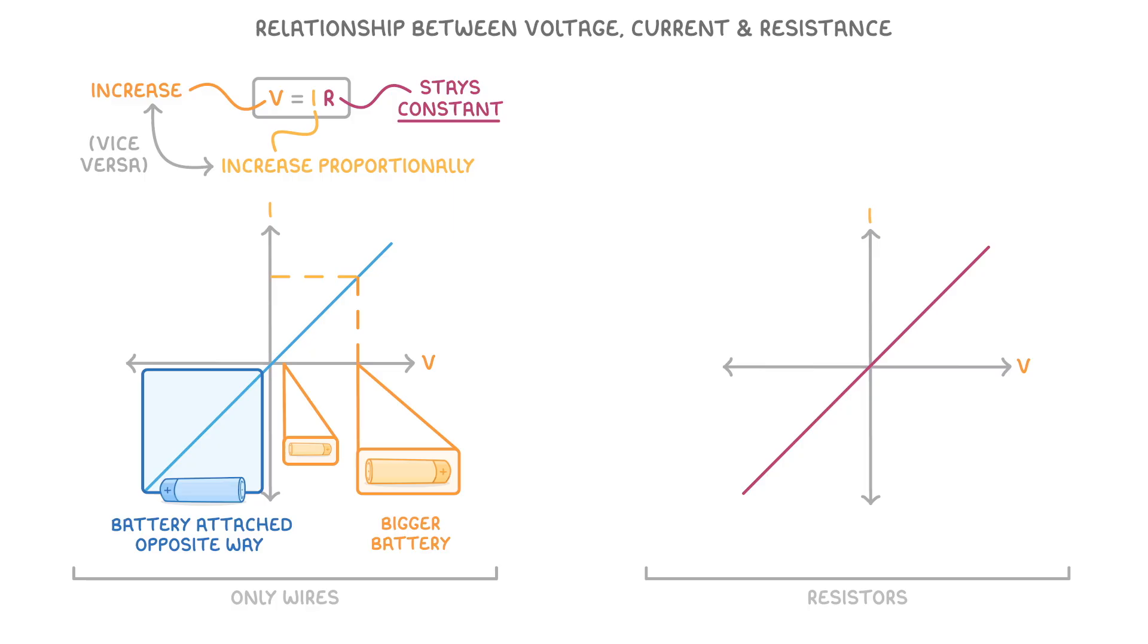If we used a different wire or a different resistor, the line would still be straight, but it would be more or less steep. For example a bigger resistor would have a less steep line, like this one for a 10 ohm resistor. While a smaller resistor would have a steeper line.